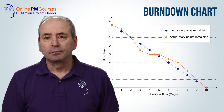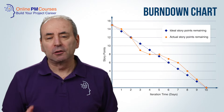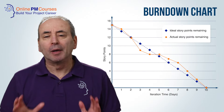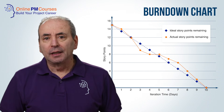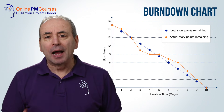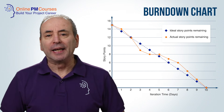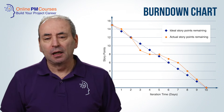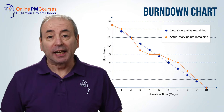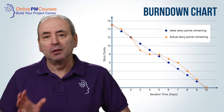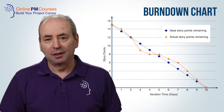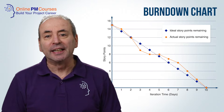Let's start with the burndown chart. On a burndown chart, as you make progress and work is completed, the amount of work remaining diminishes, which gives us the characteristic downward slope of the burndown chart — which gives it its name.